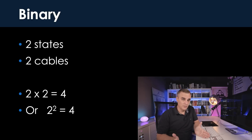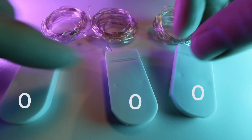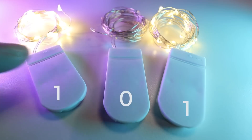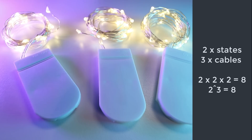Let's assume we've got three cables. We have three cables and two states — current state is off, so binary value is zero-zero-zero. Without going through all combinations, we could have zero-zero-one, or one-zero-one, or one-one-one. So we have two states and three cables: two times two times two is eight, or two to the power of three is eight. There are eight different combinations.